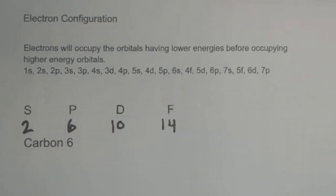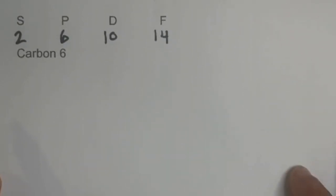Let's get started with carbon 6. Carbon 6, since it's an atom, has an atomic number of 6, so it's going to have 6 electrons.